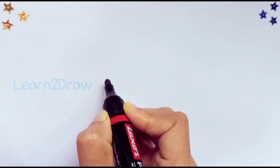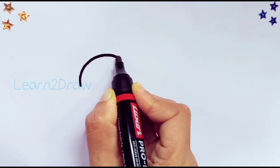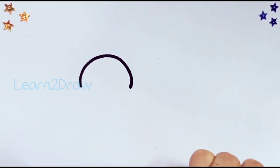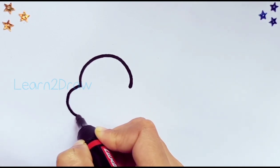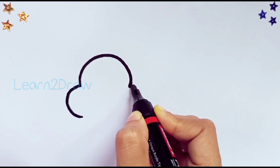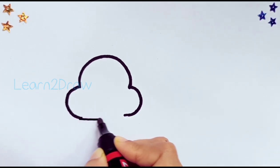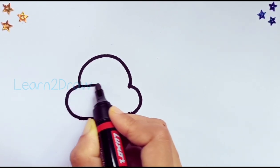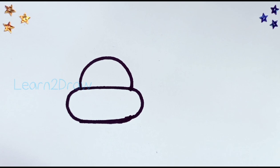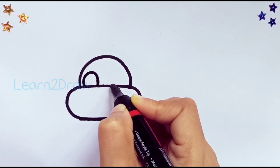Let's draw a semicircle. Okay, now draw two more semicircles side by side. Okay, now this is the hippo's head.